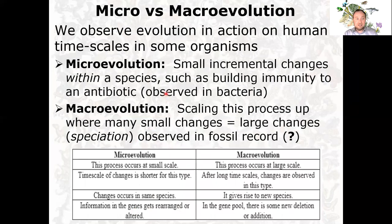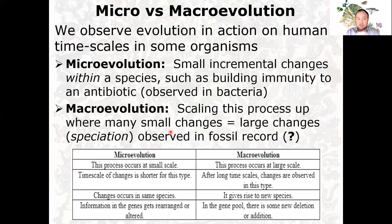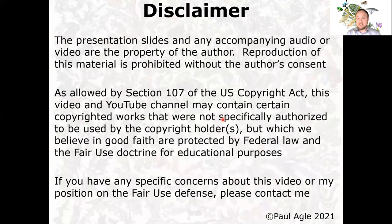The distinction between microevolution and macroevolution: microevolution is small incremental changes within a species over time, such as building antibiotic immunity. Macroevolution is when those small changes result in a split into different species — changes so large that organisms can no longer successfully interbreed. Macroevolution is much harder to observe on human timescales. Is it just microevolution scaled up? There's a lot of debate about that, and that's what we'll talk about next time.